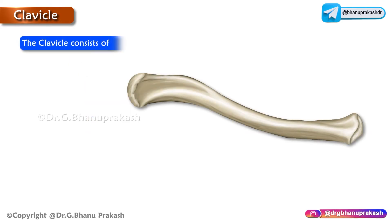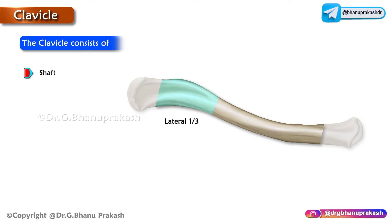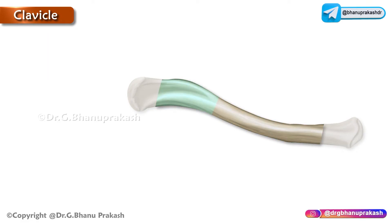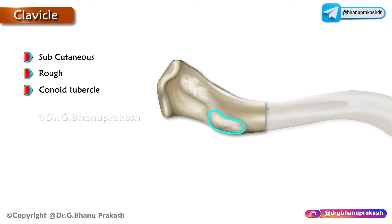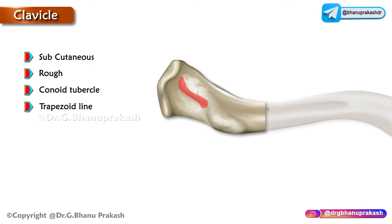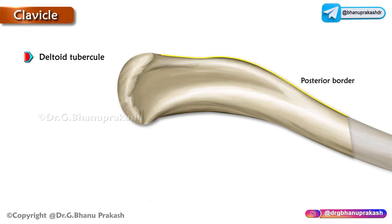The clavicle consists of the shaft, acromial end, and the sternal end. The shaft is divided into the lateral one-third and medial two-thirds. The lateral one-third presents with two surfaces and two borders. The superior surface is subcutaneous and the inferior surface is rough, bearing the conoid tubercle close to the posterior border, which gives attachment to the conoid part of the coracoclavicular ligament. The trapezoid line is an oblique ridge running forwards and laterally towards the acromial end, giving attachment to the trapezoid part of the coracoclavicular ligament. The anterior border is concave and bears the deltoid tubercle. The posterior border is convex.